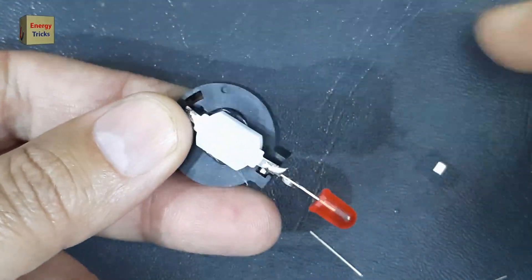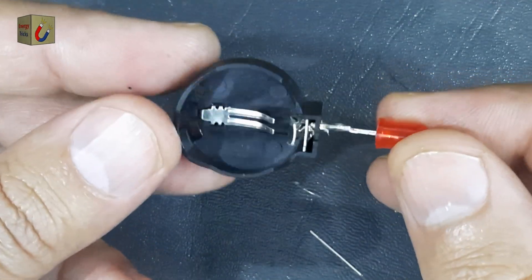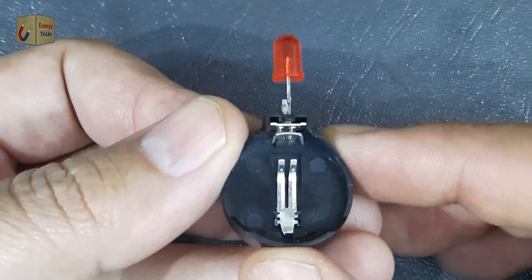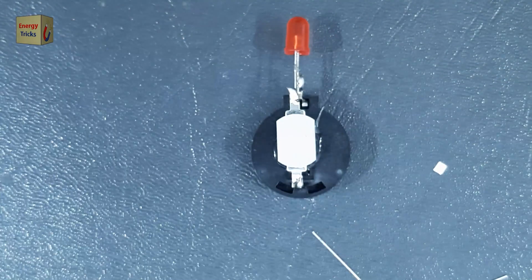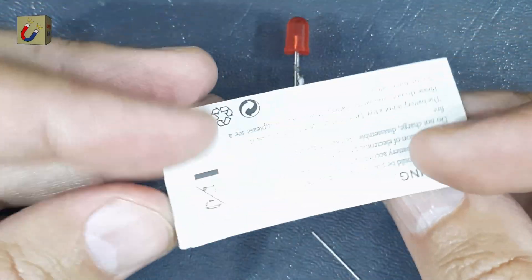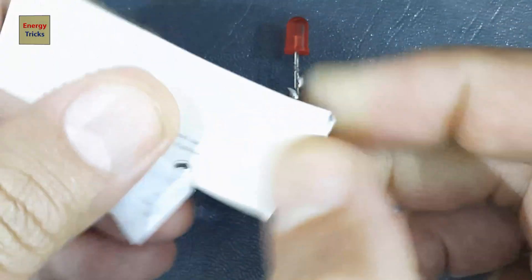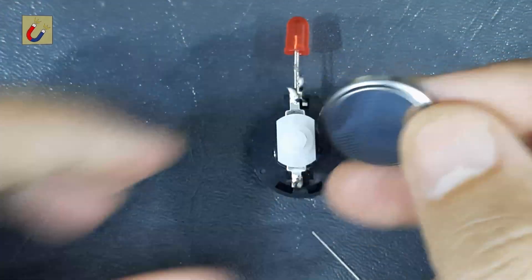Next, I'll solder the positive pin of the LED to the positive terminal of the battery holder. It's important to double check the alignment of all connections to avoid any issues later. With this step completed, the core circuit of our torch is now ready for testing.